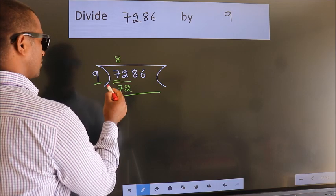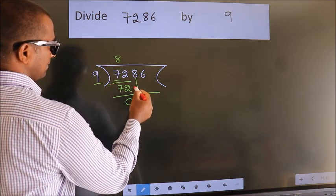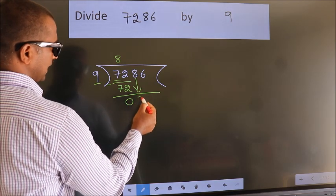Now we should subtract. We get 0. After this, bring down the beside number. So, 8 down.